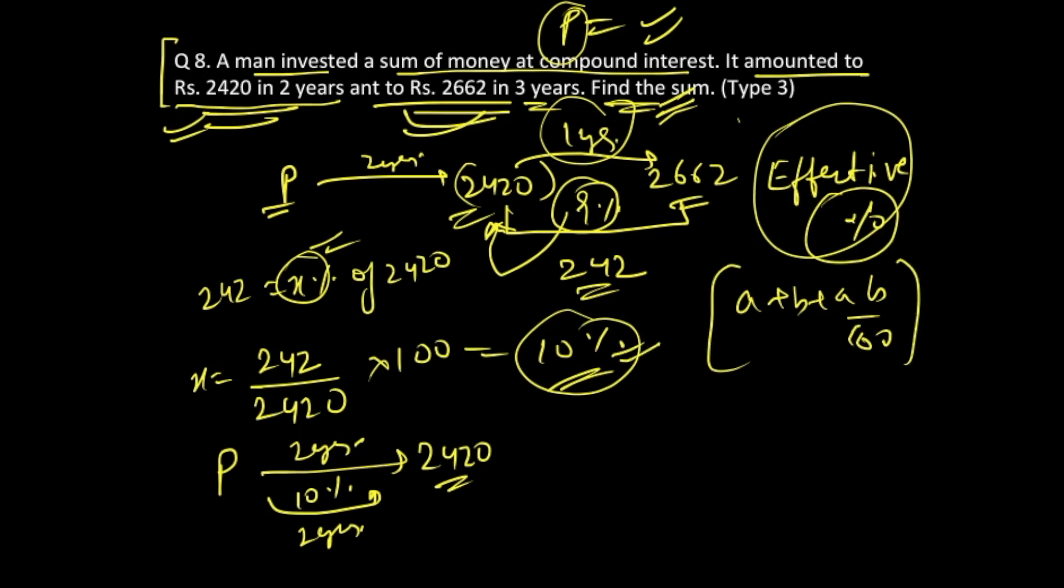So you will find out the effective percentage value for these: 10 plus 10 plus 10 into 10 over 100. Right? So this 10 into 10 is 100, this cancels this out, this becomes 1. 10 plus 10 plus 1 gives you 21. So 21 percent is the effective percentage rate of interest.